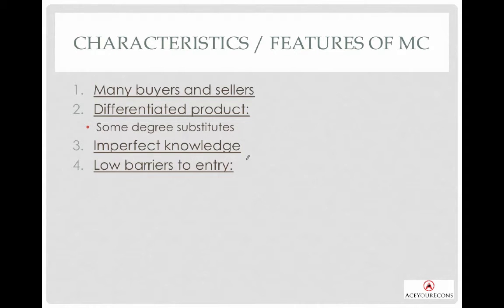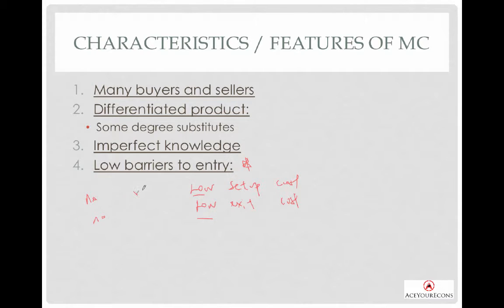The most crucial criterion is low barriers to entry. Earlier we talked about natural barriers to entry and artificial barriers to entry — that will be more critical in oligopoly. When we talk about low barriers to entry, we are talking about low setup costs and low exit costs. For the MC firm, there are still some setup and exit costs involved, unlike perfect competition where they are essentially zero. This makes MC assumptions more realistic compared to perfect competition.